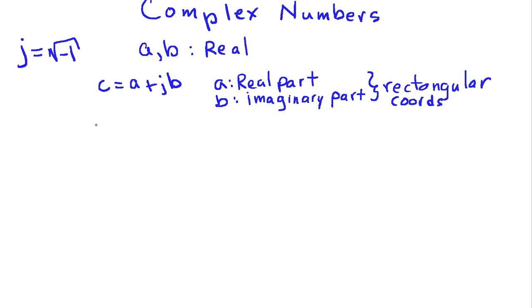The other format that we'll use is to write this complex number in what we call polar form, and in that case we'll have c be equal to r times e to the j phi. In this case, r is the magnitude of the number, and phi is the phase, and this representation is known as polar coordinates.